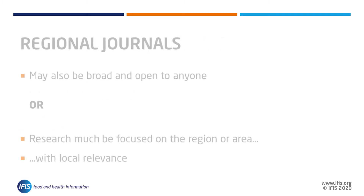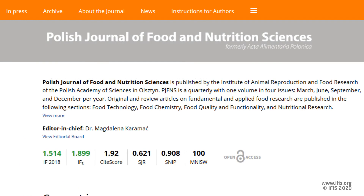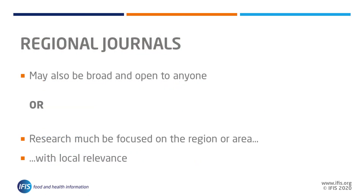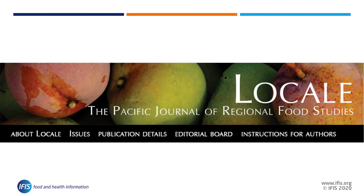Journals with a regional title may simply be based in that area, such as the Polish Journal of Food and Nutrition Science, publishing work from anywhere. Or they might publish work which focuses on that specific country or geographic area, such as Locale, the Pacific Journal of Regional Food Studies.